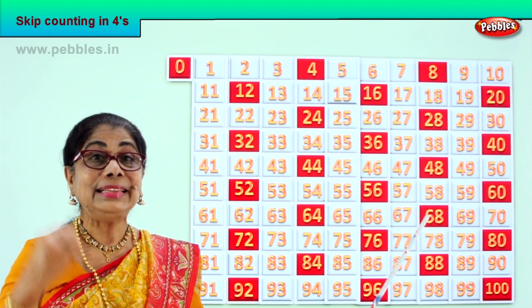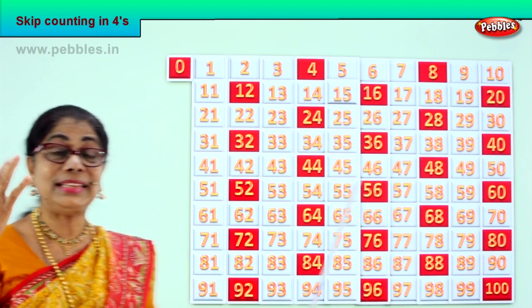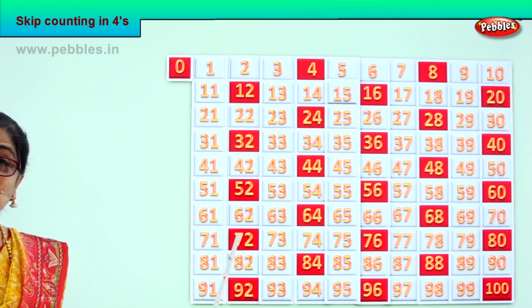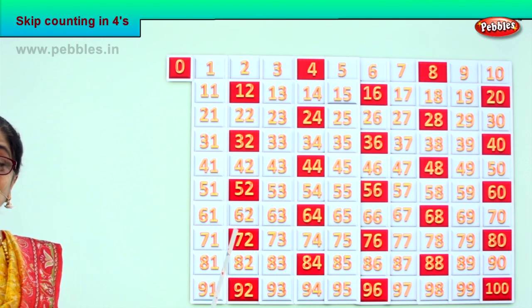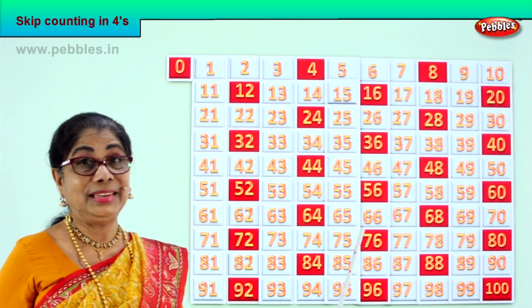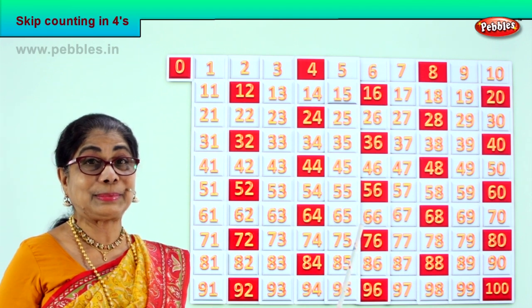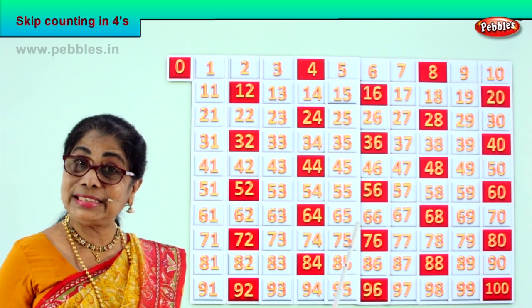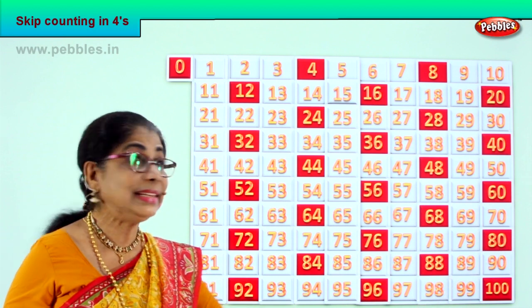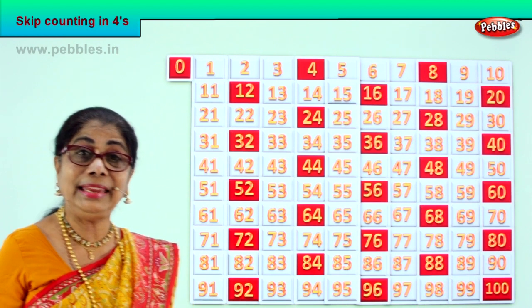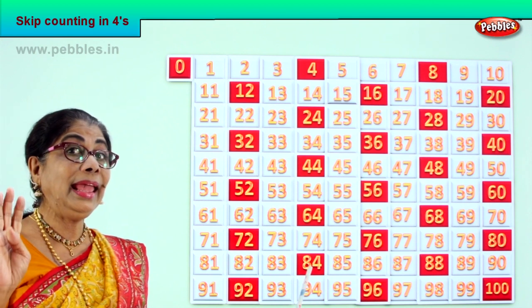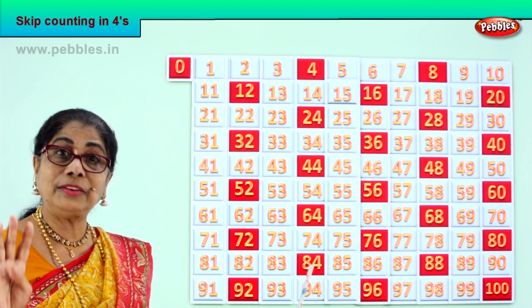After 68: 69, 70, 71, 72. After 72: 73, 74, 75, 76. After 76: 77, 78, 79, 80. After 80: 81, 82, 83, 84.